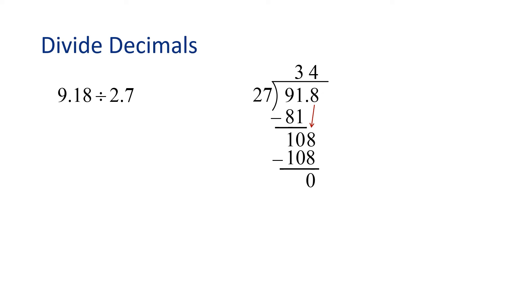Our final step is to write the decimal point by putting it directly above where it was in the dividend. So overall, the quotient is 3.4. So 9.18 divided by 2.7 is 3.4.